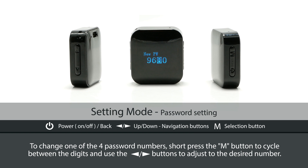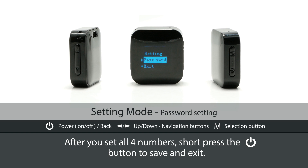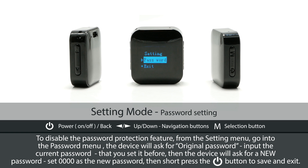Password Setting. Set between the digits and use the arrow buttons to adjust to the desired number. After you set all four numbers, short press the power button to save and exit. To disable the password protection feature, from the setting menu, go into the password menu.